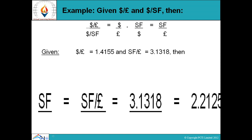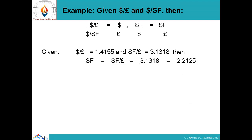Example: (dollar per pound) divided by (dollar per SF) equals (dollar per pound) multiplied by (SF per dollar), which equals SF per pound. Given dollar per pound equals 1.4155 and SF per pound equals 3.1318, then SF per dollar equals SF per pound divided by dollar per pound, which equals 3.1318 divided by 1.4155, which equals 2.215.